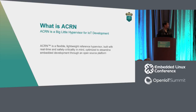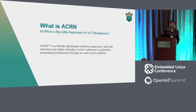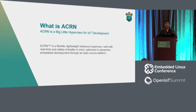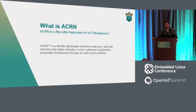So what's ACRN? ACRN is a big little hypervisor for IoT development. Little means the footprint is pretty small. Big means the functionality is pretty large. As Ima mentioned in this morning's keynote, ACRN is a scalable, flexible, lightweight, reference hypervisor design with real-time behavior and safety and criticality in mind.